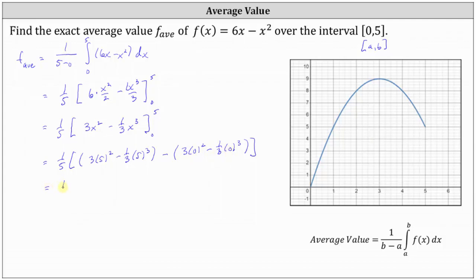Simplifying further, we have 1 5th times. 3 times the square of 5 is 3 times 25 or 75 minus 1 3rd times the cube of 5. The cube of 5 is 125, giving us minus 125 thirds.